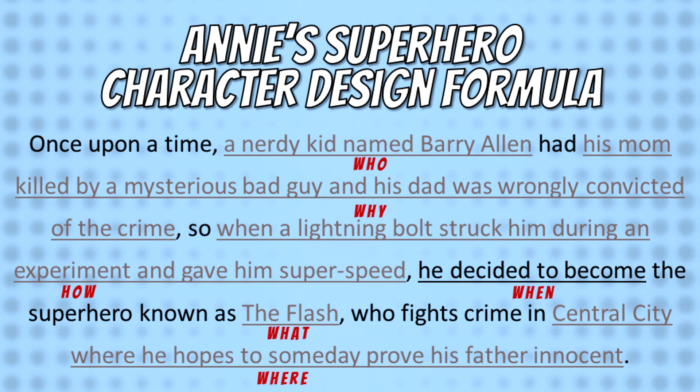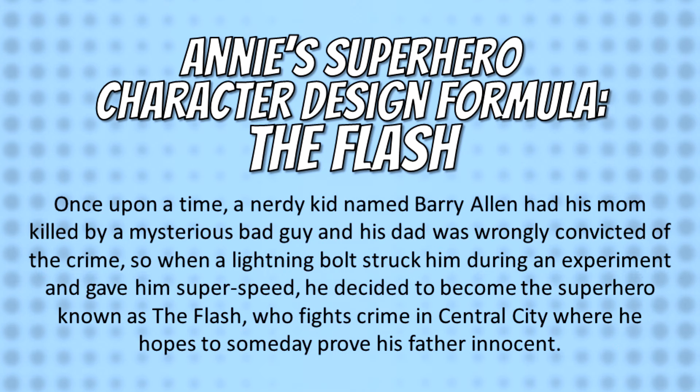Okay, those are all the six questions. So with that in mind, let's take a look back at the formula and take an example from something that most people who are fans of superhero fiction are familiar with. Since the Flash movie trailer recently dropped, let's go ahead and use him — but let's take the CW version, since that's just more convenient right now. Once upon a time, a nerdy kid named Barry Allen had his mom killed by a mysterious bad guy, and his dad was wrongly convicted of the crime. So, when a lightning bolt struck him during an experiment and gave him super speed, he decided to become a superhero known as The Flash, who fights crime in Central City, where he hopes to someday prove his father innocent. You may have to tweak the wording a little bit for flow, depending on how your character works, but this is a really good reference synopsis for you to go back to when you're working on your character and remember exactly where they started from.